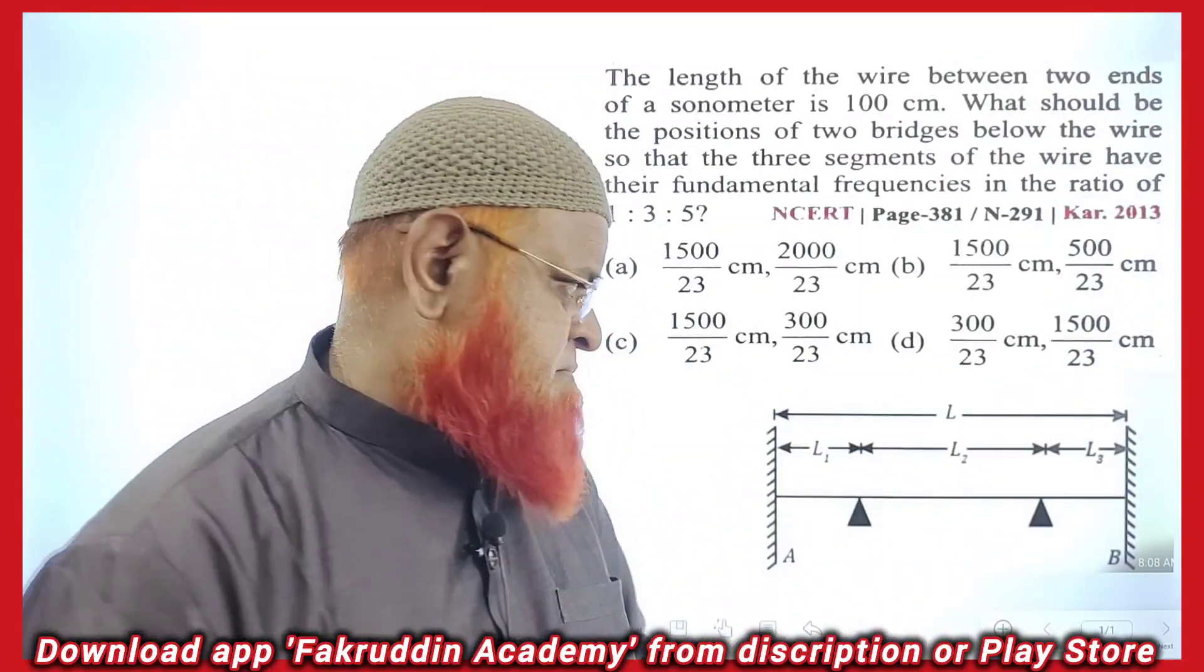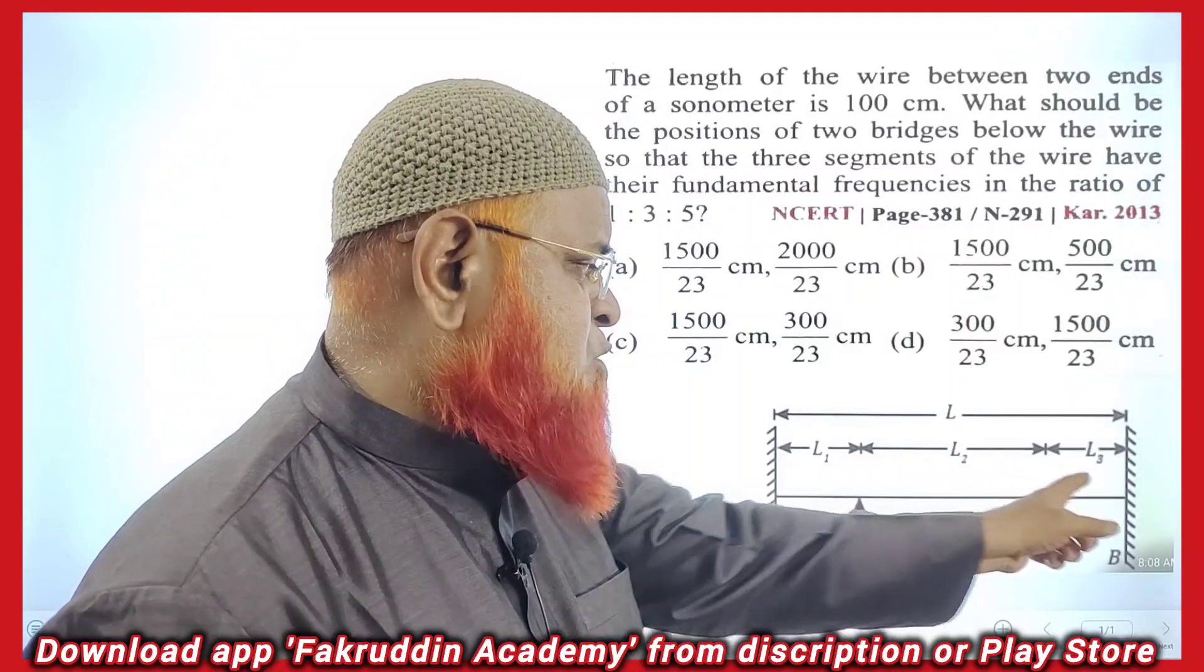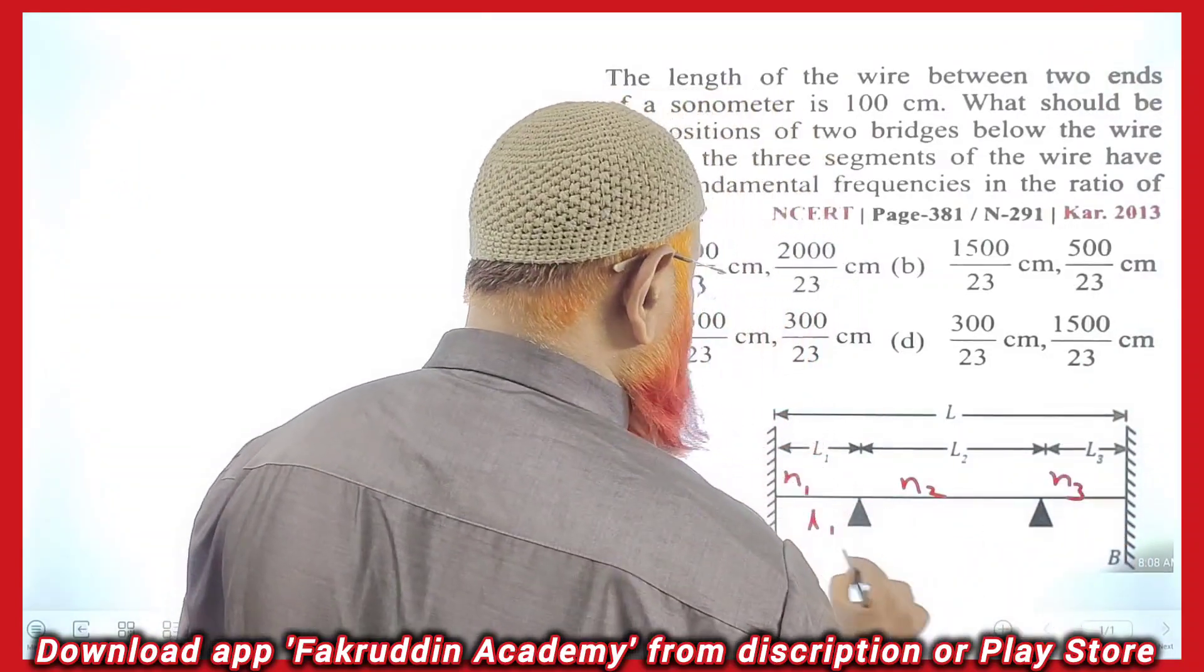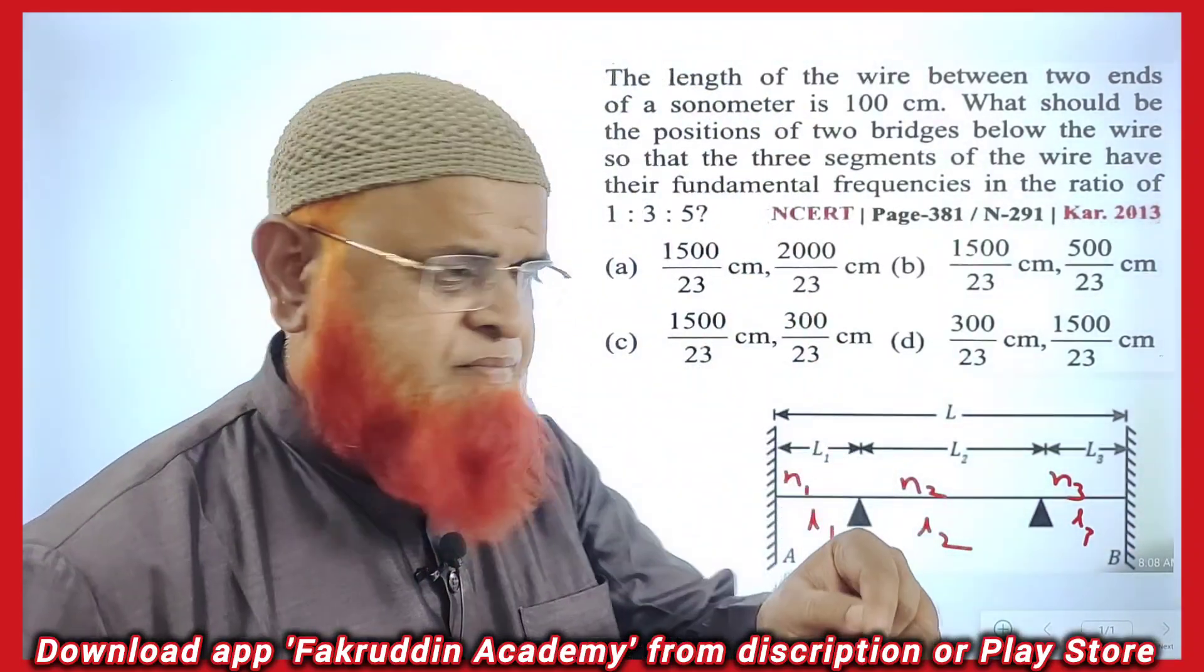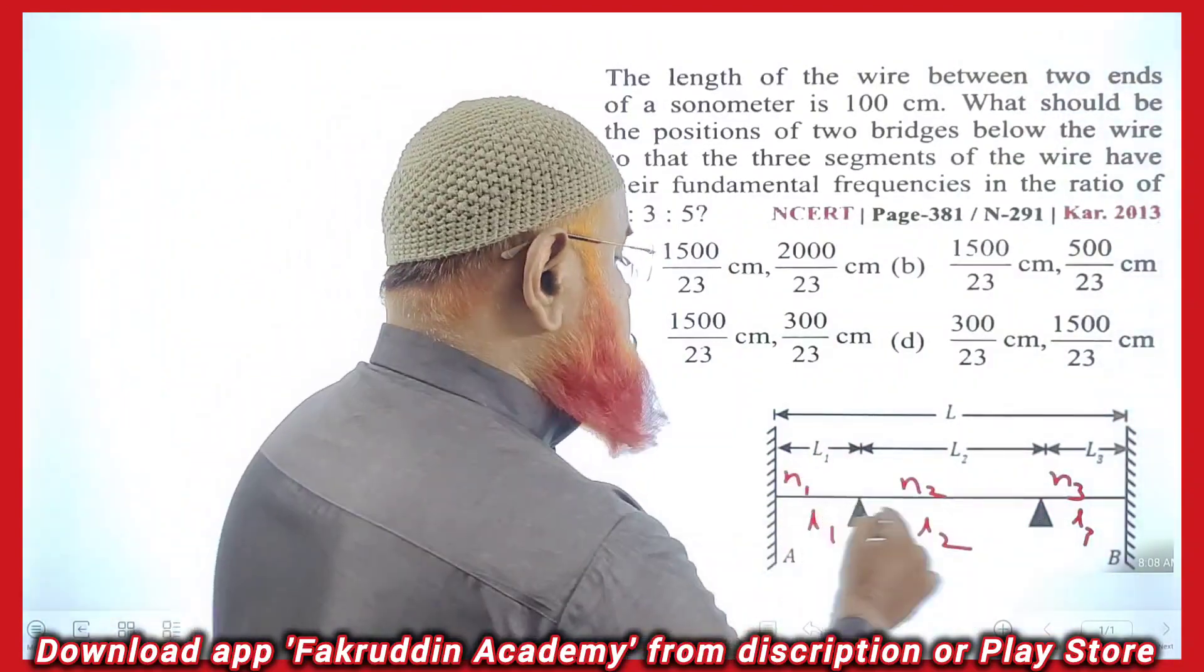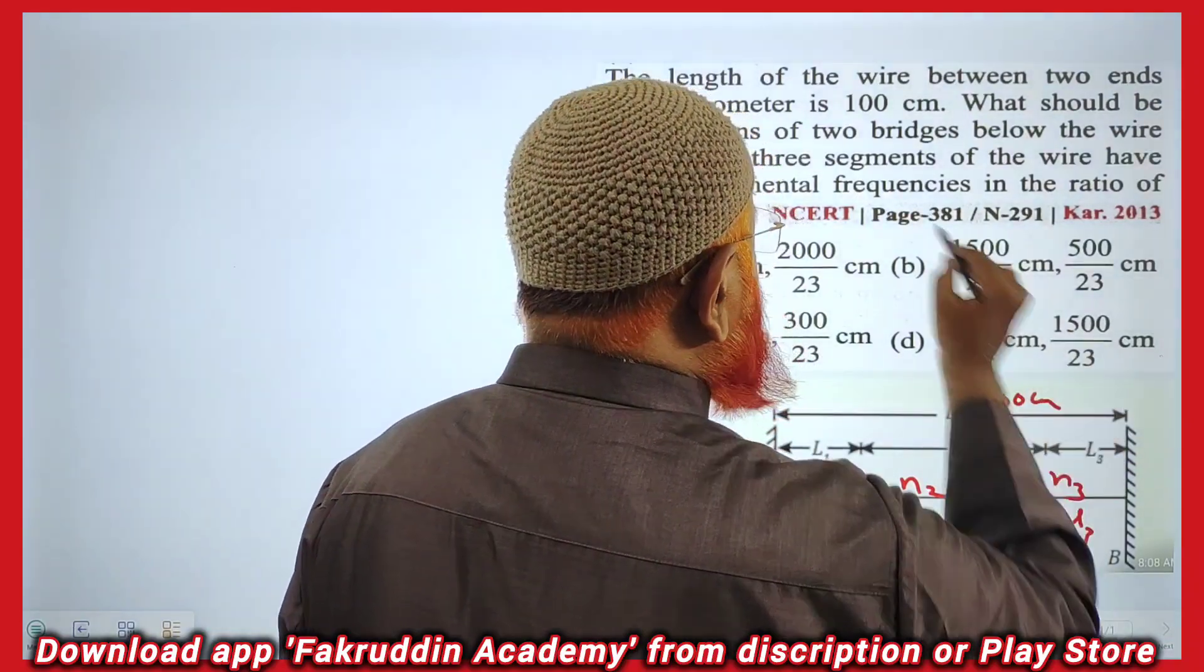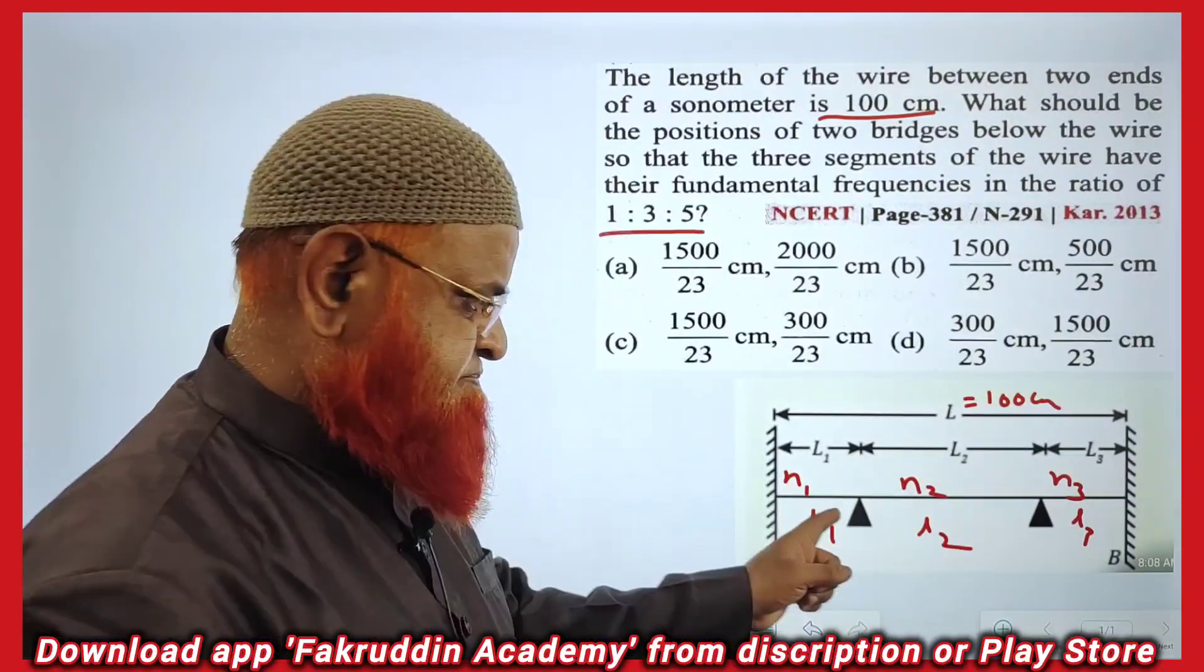If you see this question, there is a string which was divided into three parts L1, L2, and L3. What are the frequencies of each part? N1, N2, and N3, where the lengths are L1, L2, and L3. These are the three parts and he's asking us to find out at what points the wedges are placed. What are its lengths? The overall length, the total length, is given as 100 centimeters in the problem itself. The frequency ratios are given.